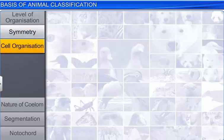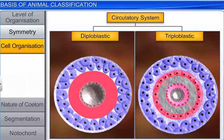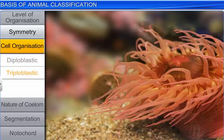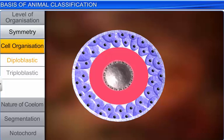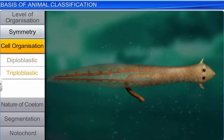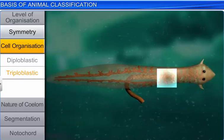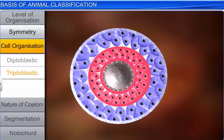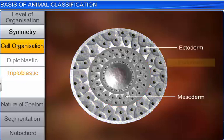Cell organization is the next feature used for classification. There are two types of cell organization: diploblastic and triploblastic. Coelenterates have diploblastic organization, where the germinal layers of the cell consist of an external ectoderm and an internal endoderm. Members from phylum platyhelminthes to chordates have triploblastic organization, where a third germinal layer, the mesoderm, is found between the ectoderm and the endoderm.